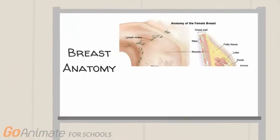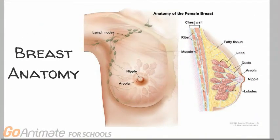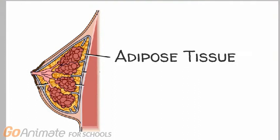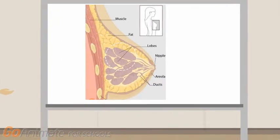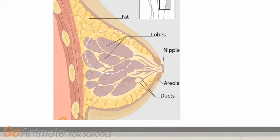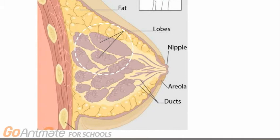Important to understanding breast cancer is the structure of the breast. Knowing the different parts and functions can help you better grasp the specifics of breast cancer. The female breast is mostly made up of a collection of fat cells called adipose tissue. Embedded within the tissues of each breast are 15 to 20 lobes, which contain lobules.